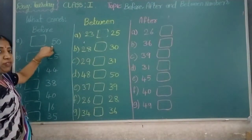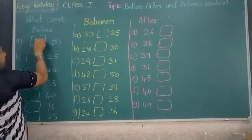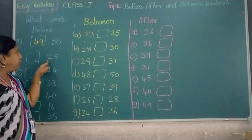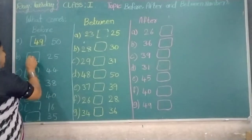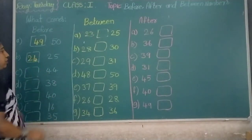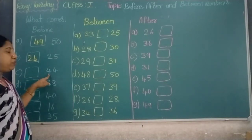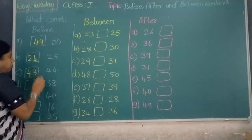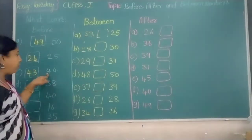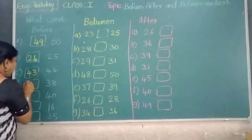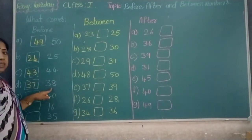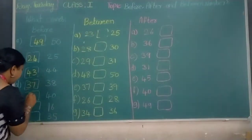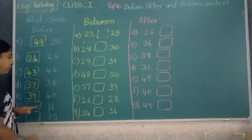What comes before 50? 49 comes before 50. What comes before 25? 24 comes before 25. What comes before 44? 43 comes before 44. What comes before 38? 37 comes before 38. What comes before 40? 39 comes before 40.